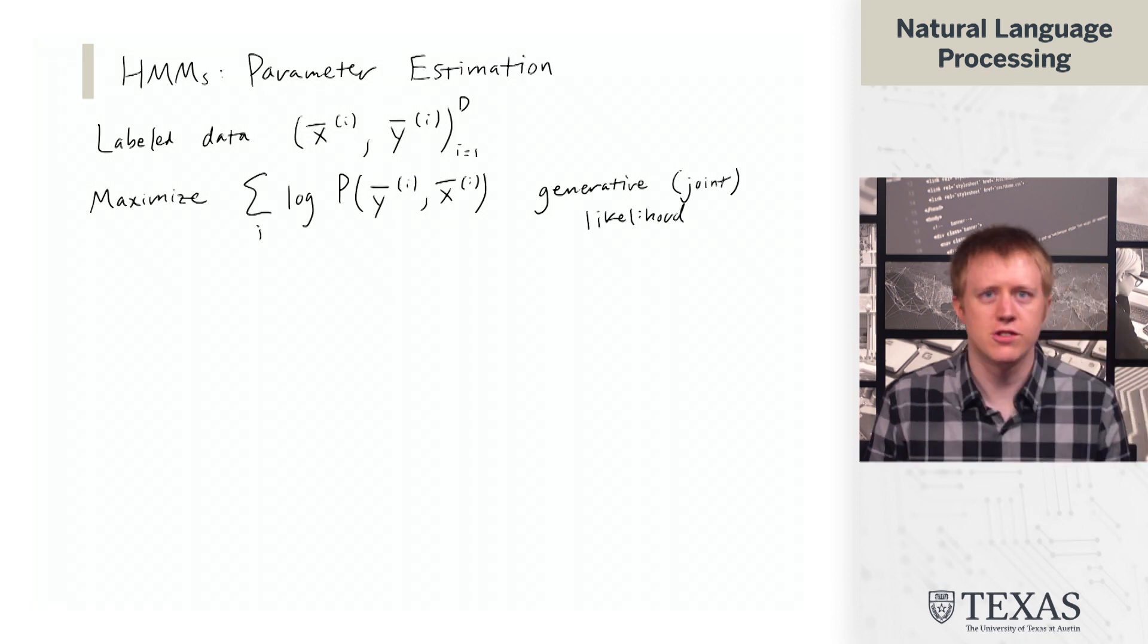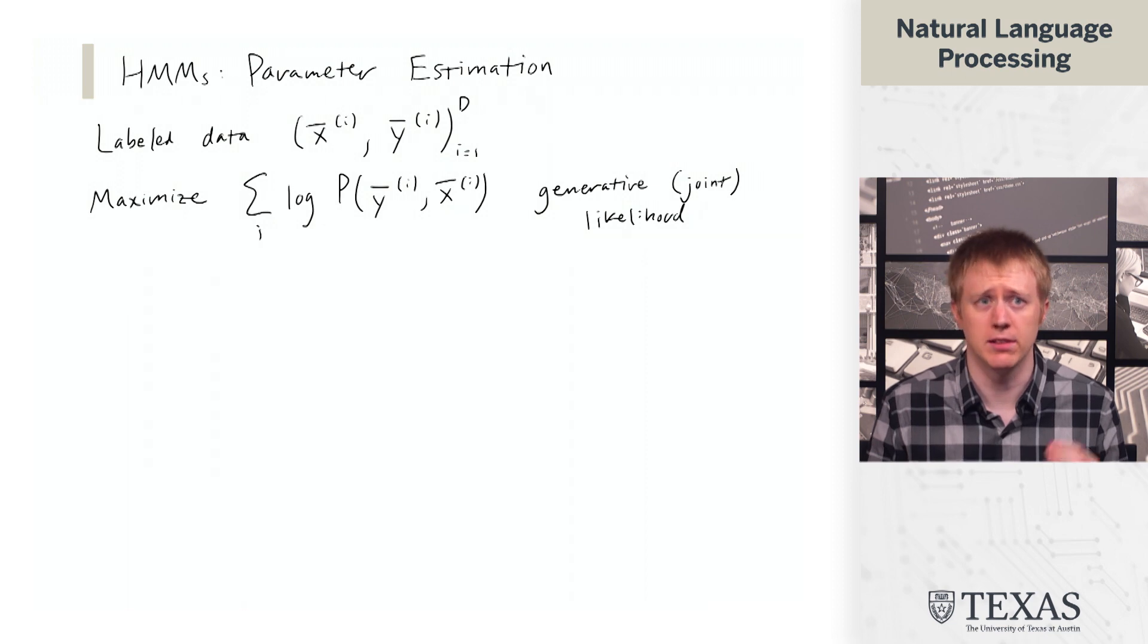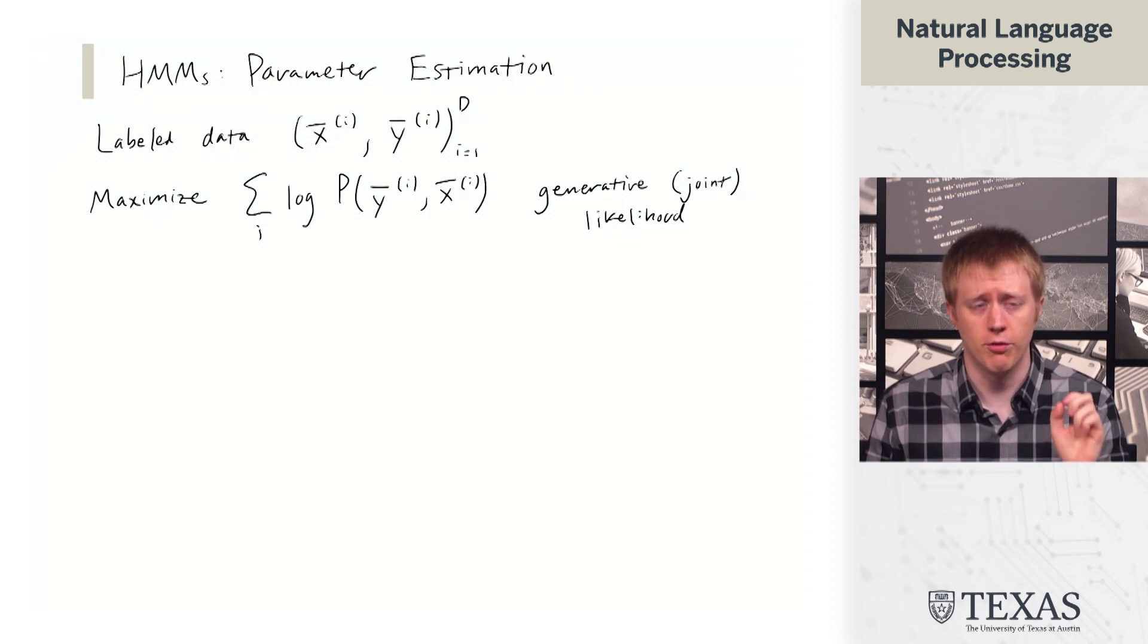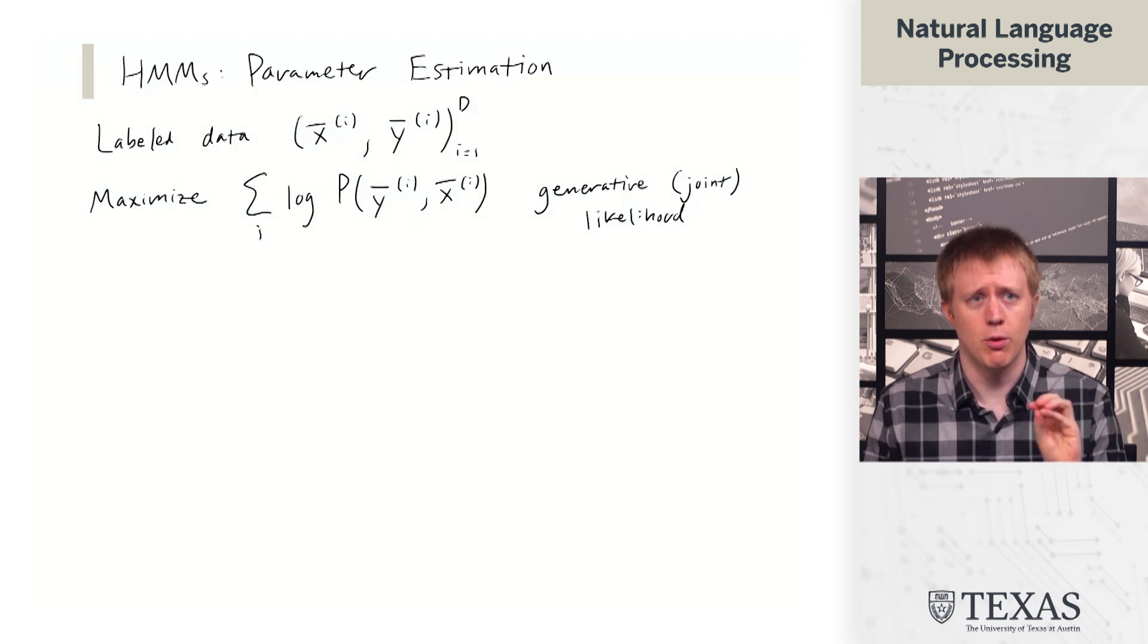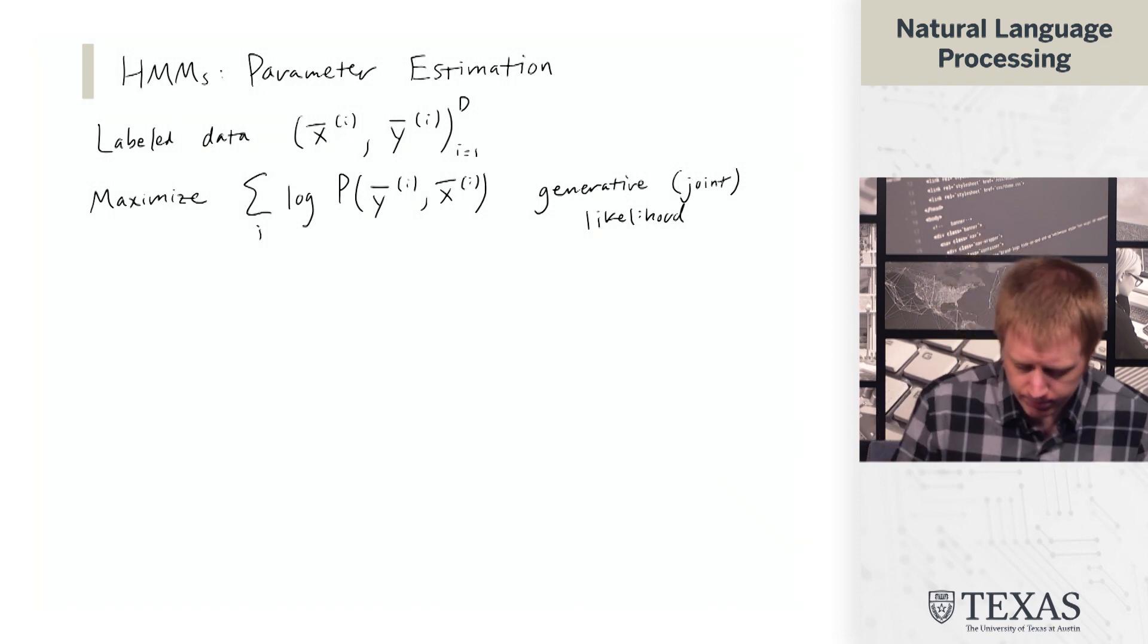So this is the generative probability of the data, or rather the joint probability of y and x. So we can call this the generative likelihood. Recall that this is a generative model with a probability distribution over y comma x, not y conditioned on x like logistic regression. When we look at this data, we're not just thinking about maximizing p of y given x, but we're in fact thinking about maximizing the joint distribution here.